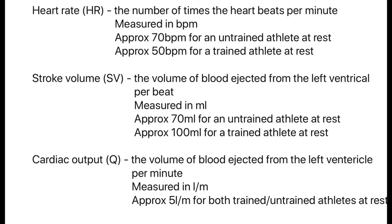Cardiac output is the volume of blood ejected from the left ventricle per minute, measured in litres per minute — approximately 5 litres per minute for both trained and untrained athletes. After each key term I have put a shorthand. You can write these in the exam, but only if you write the full term out first and then write the shorthand in brackets. Note that a different marker marks different questions, so just because you defined it in question 3 doesn't mean you can use the shorthand in question 8 — you must write the full term out again first.